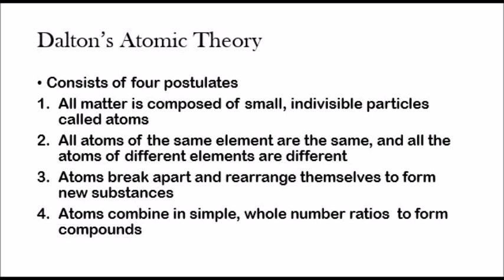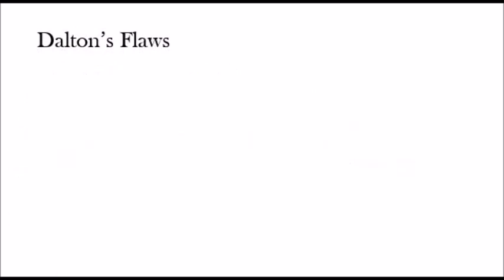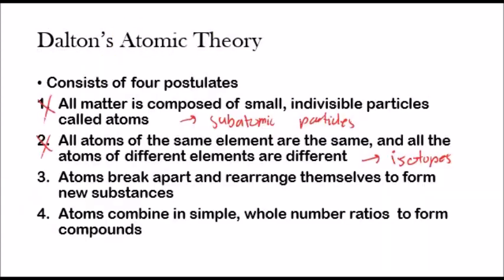Postulate one and postulate two are actually wrong. Postulate one — that atoms are small, indivisible particles — was disproven because atoms can be broken down into subatomic particles, which we'll be talking about later. Postulate two — that all atoms of the same element are the same — was disproven by the discovery of isotopes, which we'll also cover later in this unit. Postulates three and four, however, are indeed correct. That's all you have to know for now.